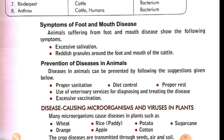Diseases in animals can be prevented by the following: proper sanitation, clean diet, proper rest, use of veterinary services for diagnosing and treating diseases, and vaccination using whatever vaccines are available for animals to prevent disease.